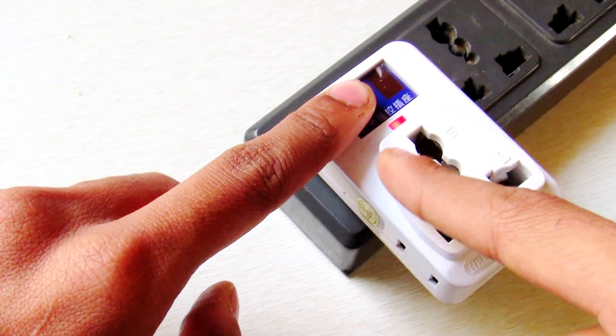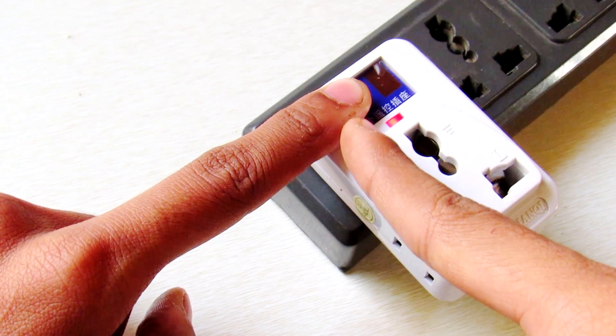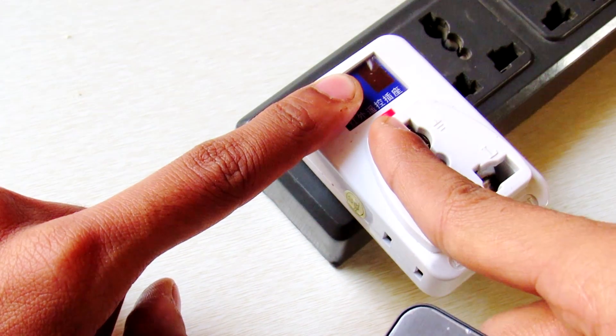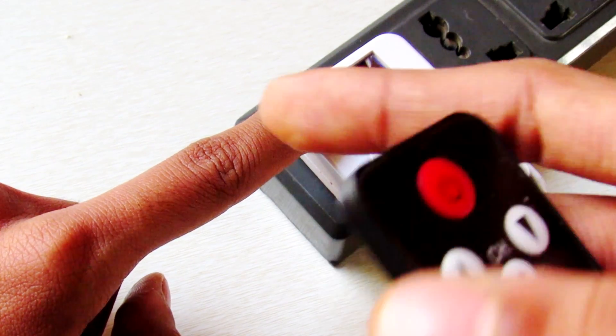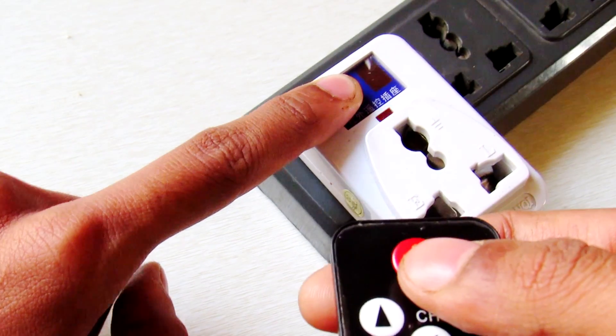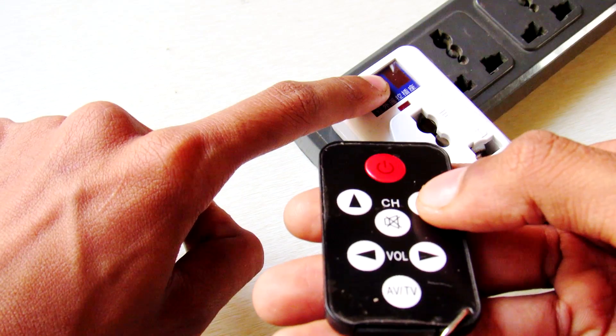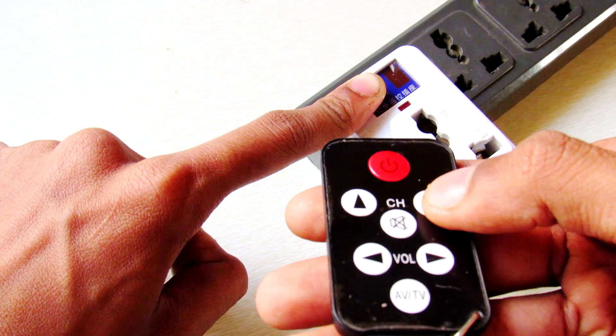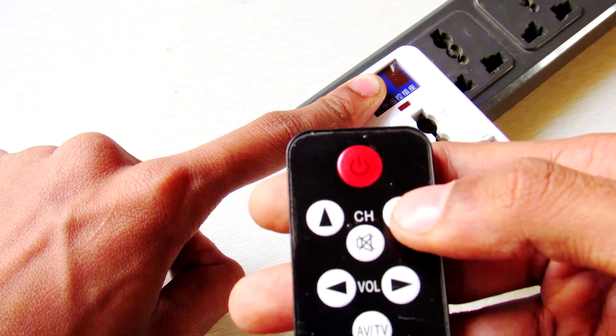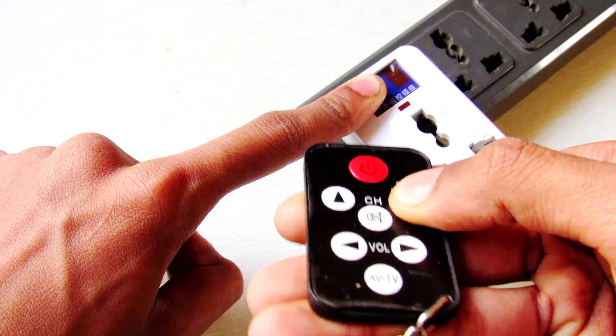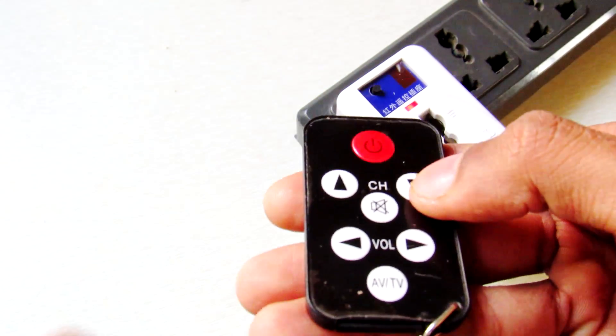Now it will flash this LED, which means that it is turned into the programming mode. Now push the button on the remote that you want to set. Here, you can see it is programmed.